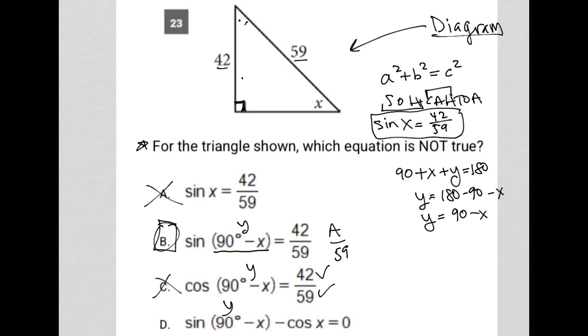Again, just to make sure we reiterate the reason why. The reason choice B is not true is because 90 minus X is this angle here that I'm calling Y. The sine, S-O-H part of SOHCAHTOA, is opposite over hypotenuse. The opposite side of this Y degree angle is this side down here, which we do not know. Choice B is saying that it should be 42. That is not true. Therefore, choice B is the correct answer.